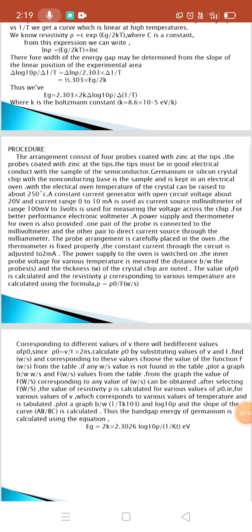Let us move through the procedure. The arrangement consists of four probes coated with zinc at the tips. The tips must be in good electric contact with the sample of semiconductor. Germanium or silicon crystal chip with a non-conducting base is the sample and is kept in an electrical oven. With the electrical oven, temperature of the crystal can be raised to above 250 degrees Celsius.